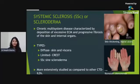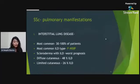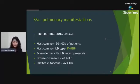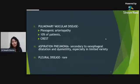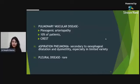Systemic sclerosis has the most extensively studied and evidence-based pharmacological management. ILD is seen in 30–100% of patients at some point. The most common type is NSIP. Any scleroderma patient with ILD has a worse prognosis — about 25% with limited disease and 50% with diffuse disease develop ILD. Pulmonary vascular disease occurs in about 10%, typically plexogenic arteriopathy in CREST syndrome. Aspiration pneumonia is attributed to esophageal dysmotility and dilatation. Pleural disease is quite rare.